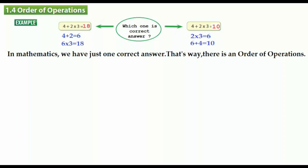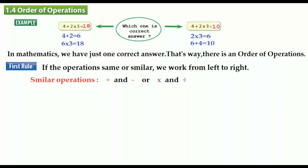We have a rule — the rule of the order of operations. The first rule is: if the operations are the same or similar, we work from left to right. If you have only addition, or only subtraction, or only multiplication, or only division in a question, we call those the same operations.